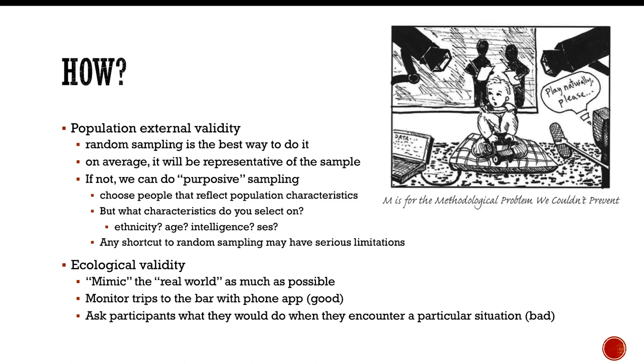An example of bad ecological validity is if you were to ask participants what they would do if they were to encounter a particular situation. That's just bad. Okay. People generally don't answer truthfully or they think they're answering truthfully when in actuality, if they were in that situation, it would respond a little differently. And that sort of situation has very, very poor ecological validity.